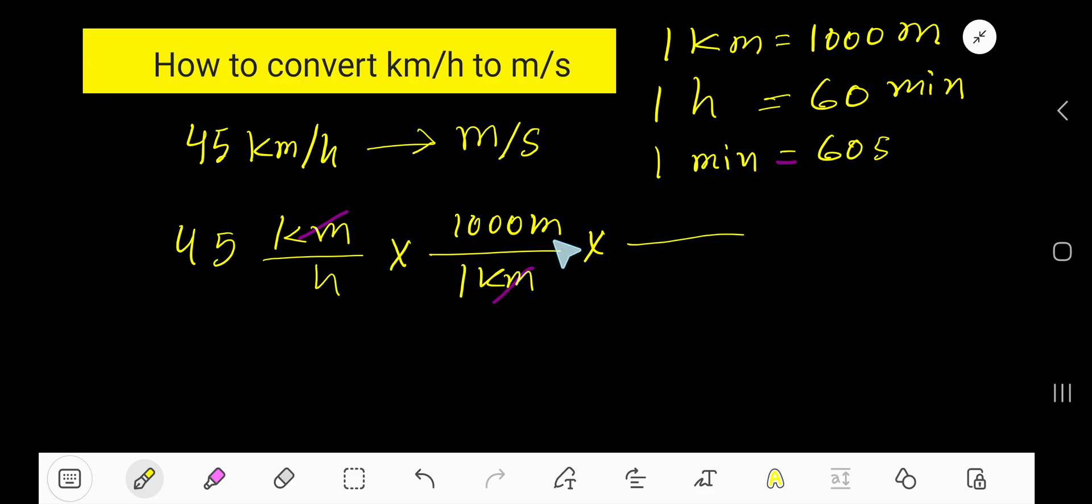Now we have meter at the top. Now we convert hour to second. But first we'll convert hour to minute using this equation, then from minute we'll convert to second. So convert this hour to minute using this conversion equation. Cancel hour. To cancel hour, we need to take hour at the top. With hour we have 60 minutes, so this will come to the bottom.